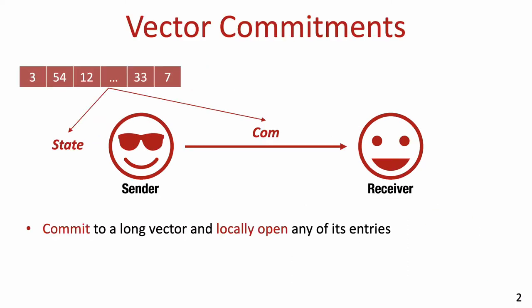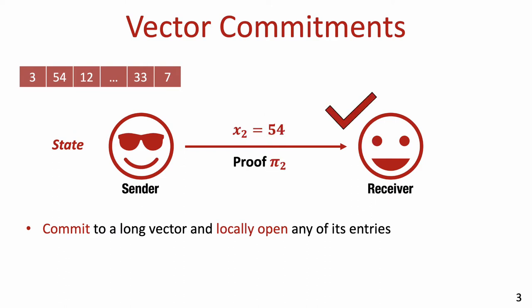Vector commitments, or VCs for short, enable a user to non-interactively commit to a long vector of elements, and then at a later stage, to locally open any of the committed vector's entries by revealing its contents and providing a short proof asserting its correctness with respect to the commitment.